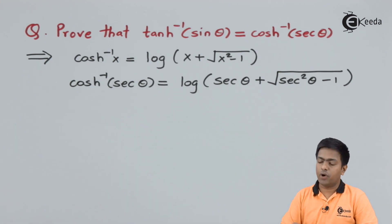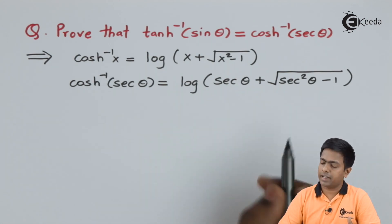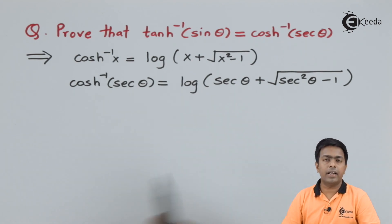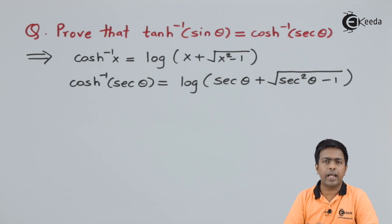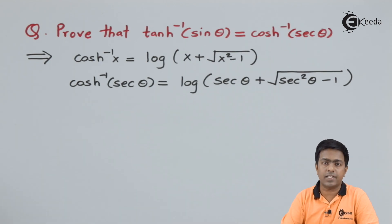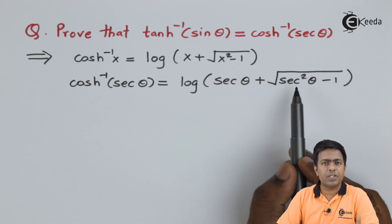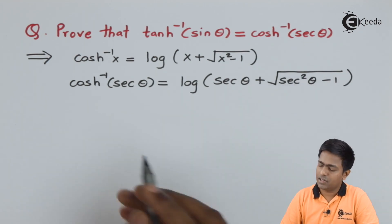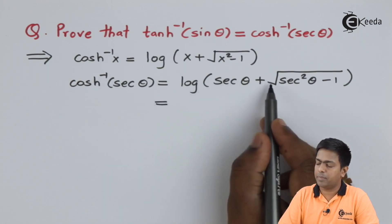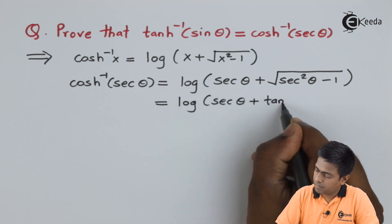We got the value, but to prove it equals the left hand side I'll simplify further. Here we can apply trigonometric identities — we have sec²θ − 1, and we know that equals tan²θ. With the square root outside, √(tan²θ) = tan θ, so we get log(sec θ + tan θ).